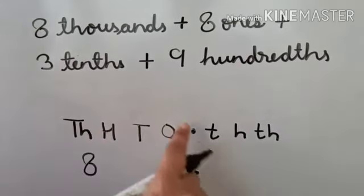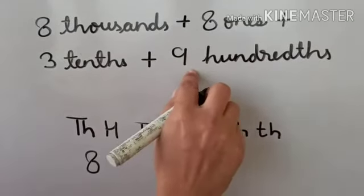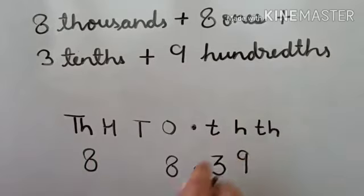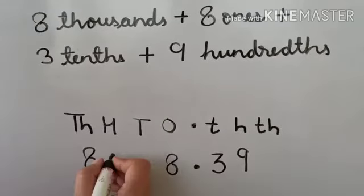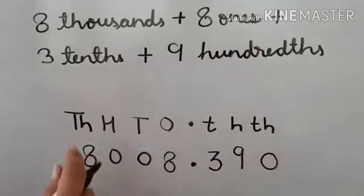Further 3 tenths, so 3 at tenth place, and 9 hundredths, so 9 is at hundredth place. Further we will fill the zeros at the leftover places, like this.